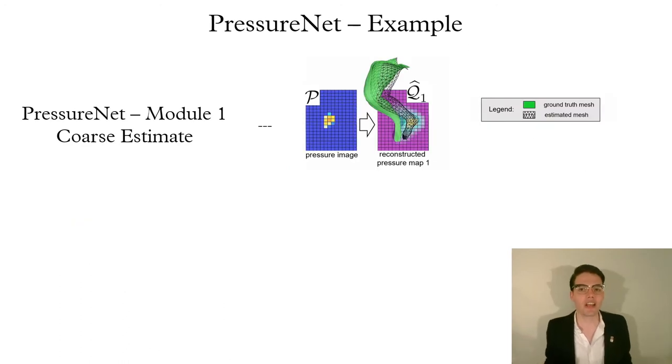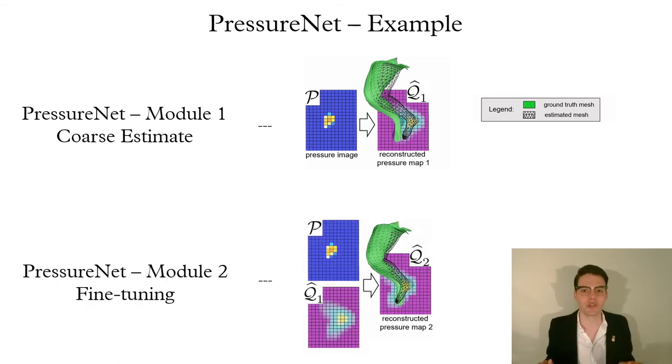Here we show PressureNet in action. The first stage computes a coarse estimate which doesn't quite match up with the ground truth. Then, based on the spatial residual between the original pressure image and the reconstructed one, module 2 fine tunes.